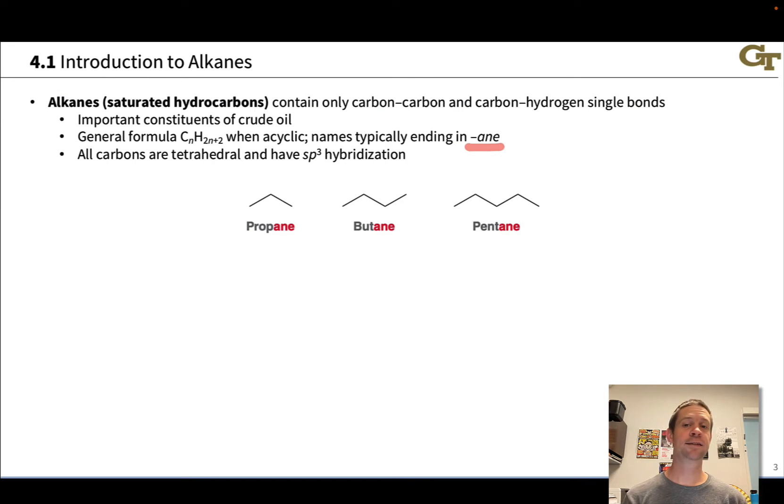Let's start with the alkanes. Alkanes are saturated hydrocarbons that contain only carbon-carbon and carbon-hydrogen single bonds. And they're most commonly found, actually, in crude oil. They're probably the most important constituent of crude oil. Because they're saturated, there's actually a mathematical relationship between the number of carbons in an alkane and the number of hydrogens. For an acyclic alkane with n carbons, there are 2n+2 hydrogens. And the names typically end in the suffix '-ane', with the prefix indicating the number of carbons involved. So for example, propane has the formula C3H8, butane has the formula C4H10, and pentane has the formula C5H12. So we see this CnH2n+2 pattern in these three linear acyclic alkanes.